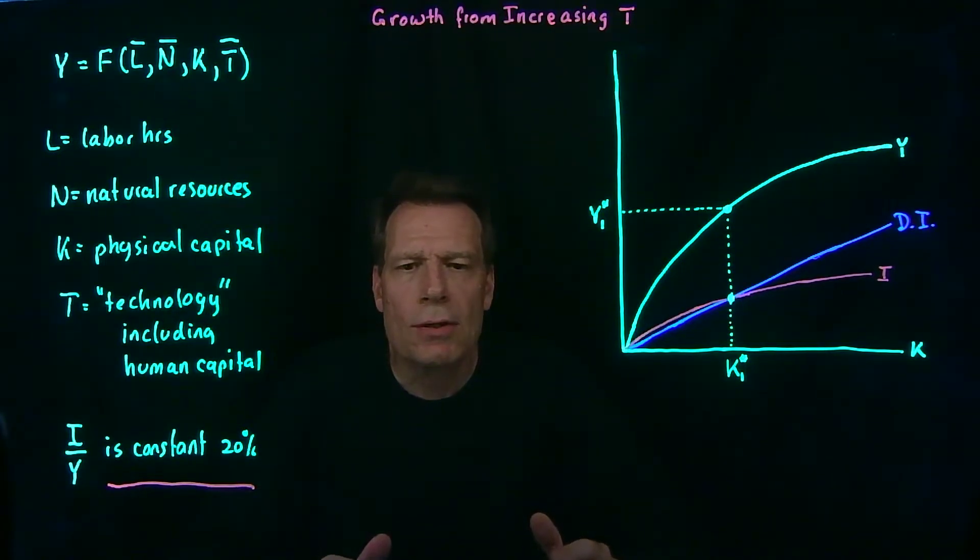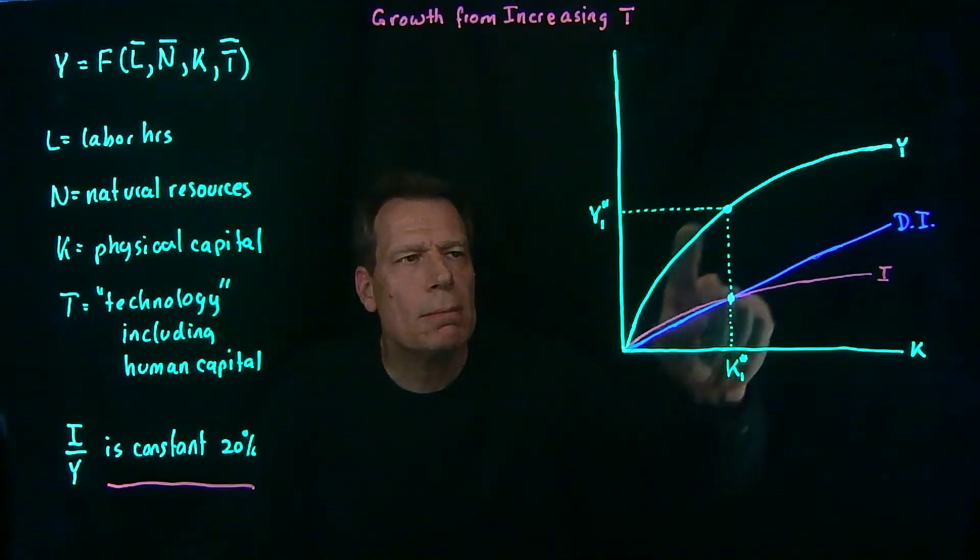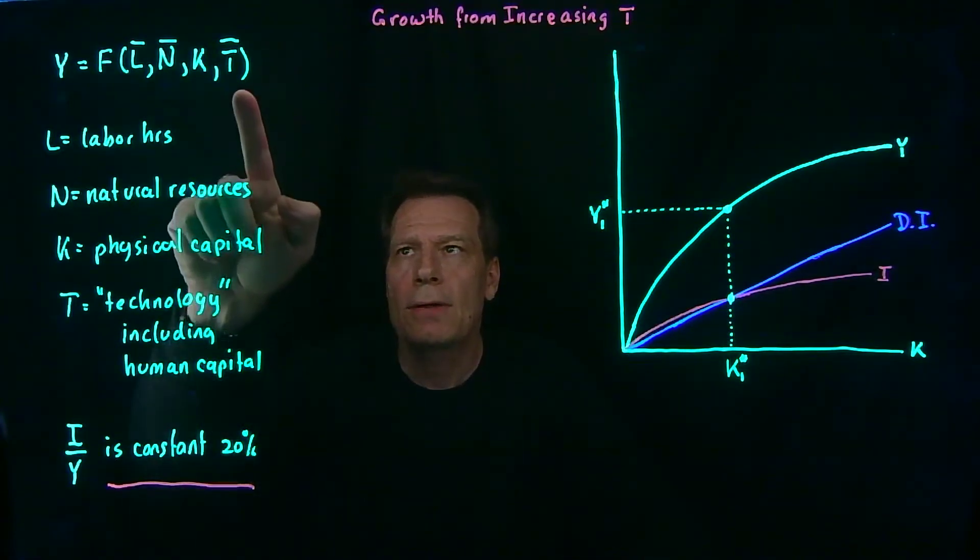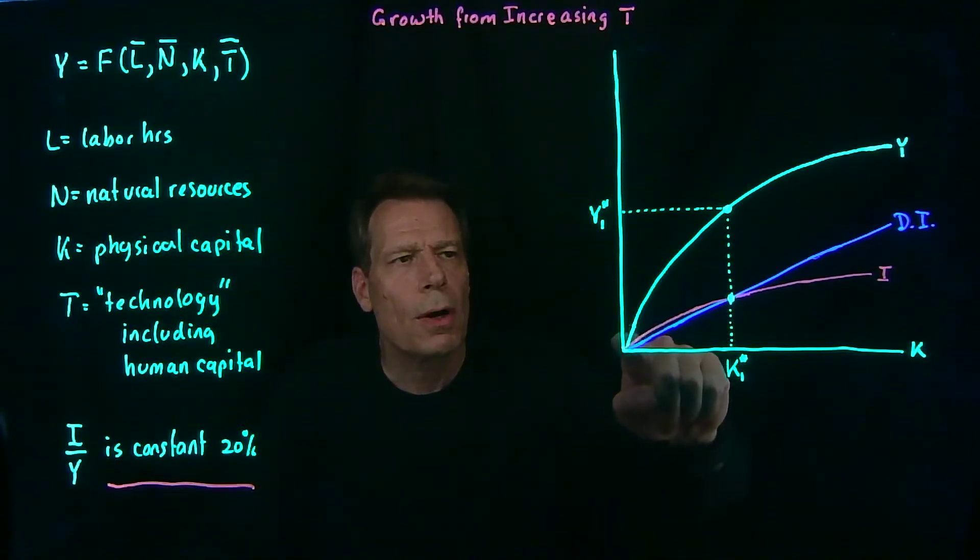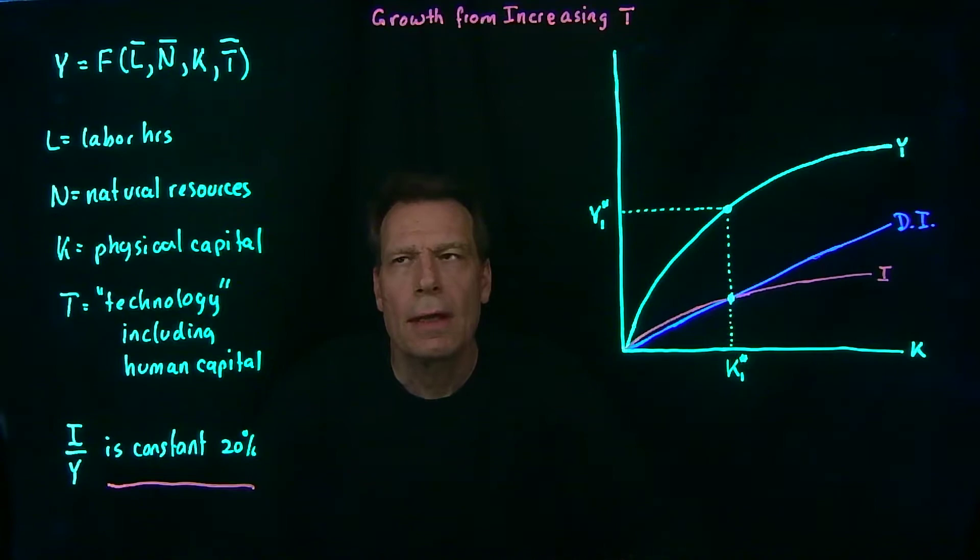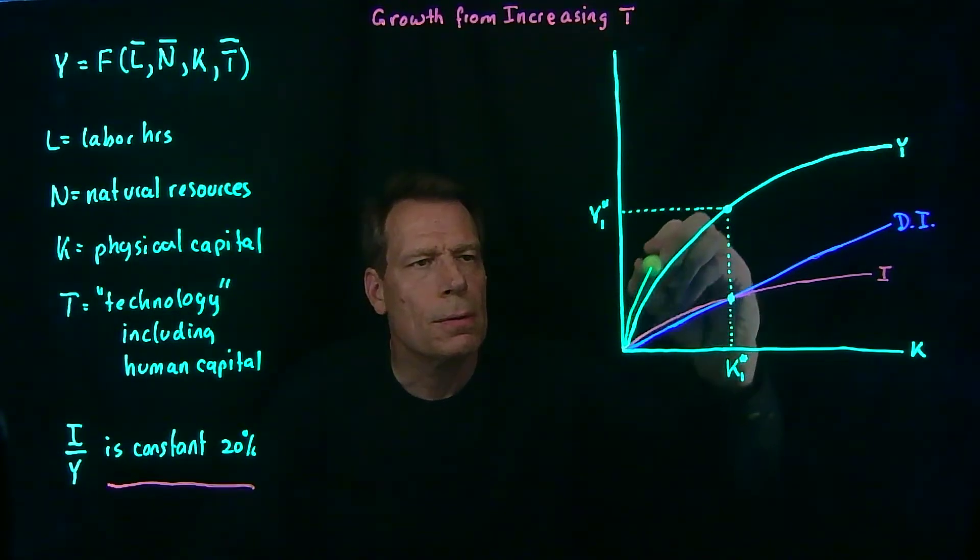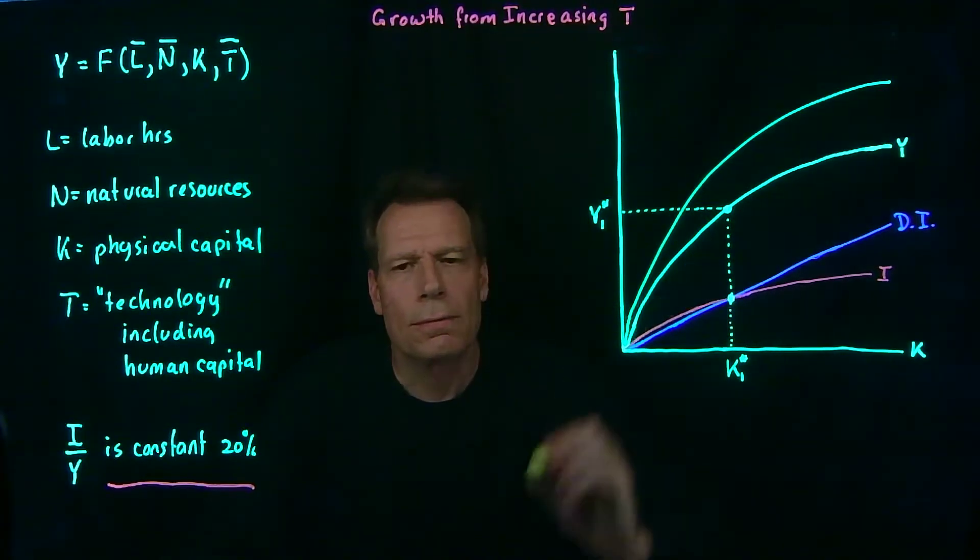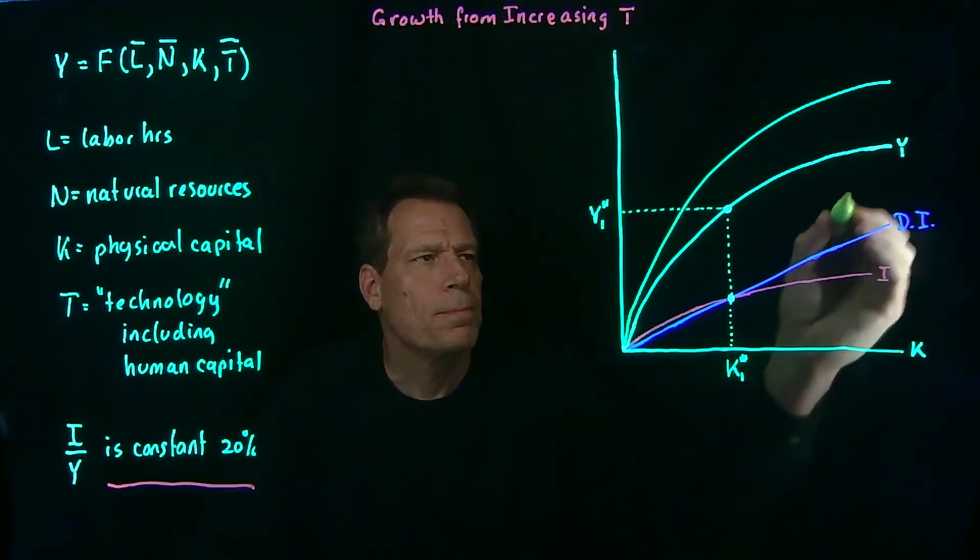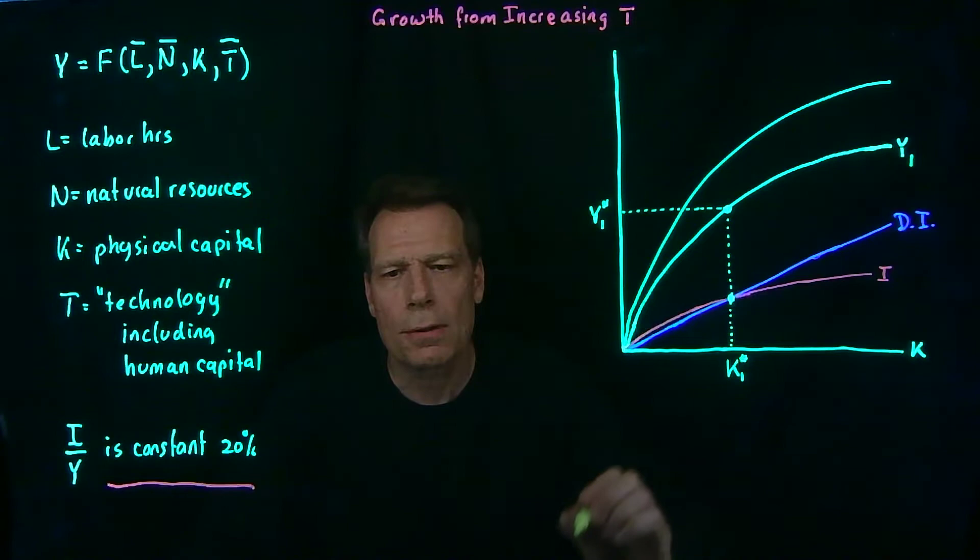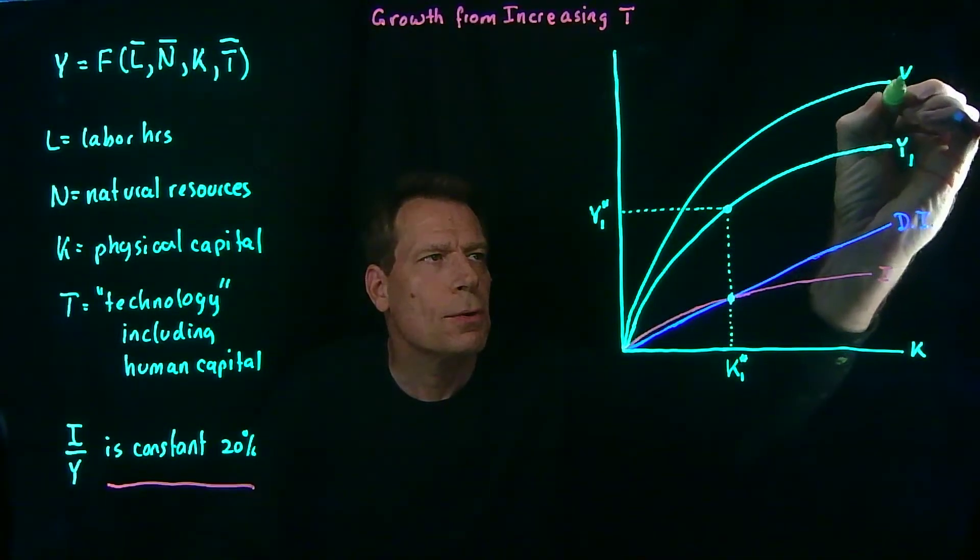But the curve that will change immediately is the GDP curve. If we increase technology, we're no longer on this original GDP curve that held technology fixed. An increase in technology will cause a rotation up in that curve. So we're going to see an upward rotation to a new curve that looks something like this. So we started at an initial curve, and we now have a new curve.